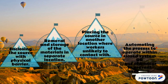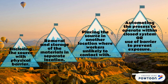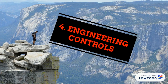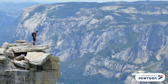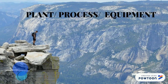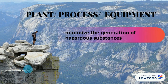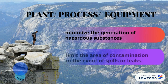Control measure 4: Engineering controls. This includes plant, process, and equipment that can minimize the generation of hazardous substances and limit the area of contamination in the event of spills or leaks. Automating the process to operate within a closed system or using barriers to prevent exposure are also options.